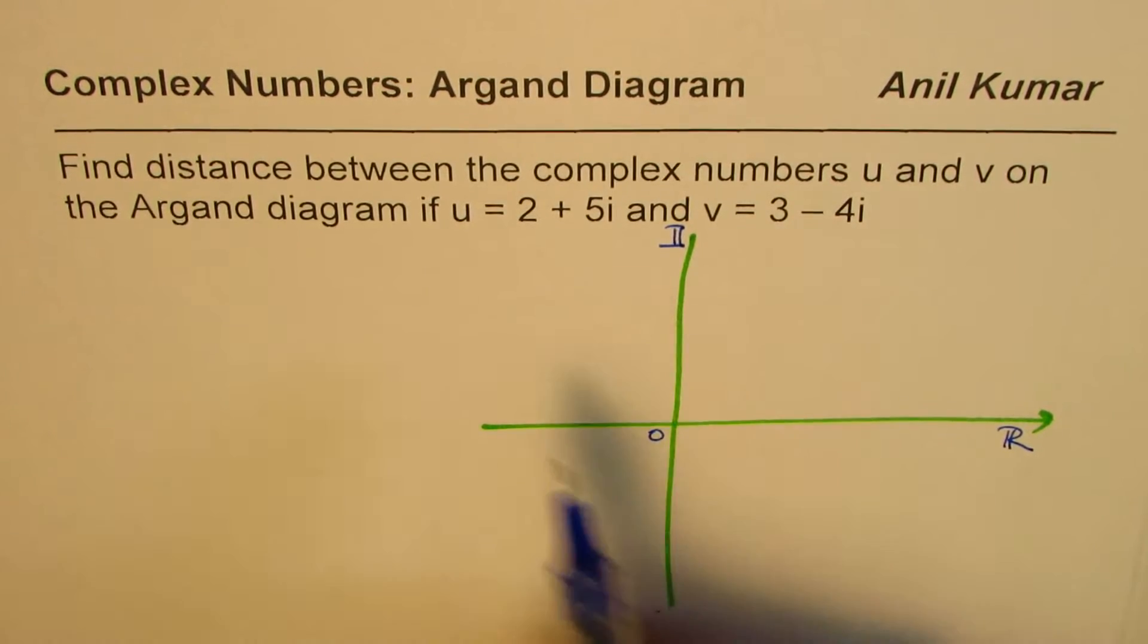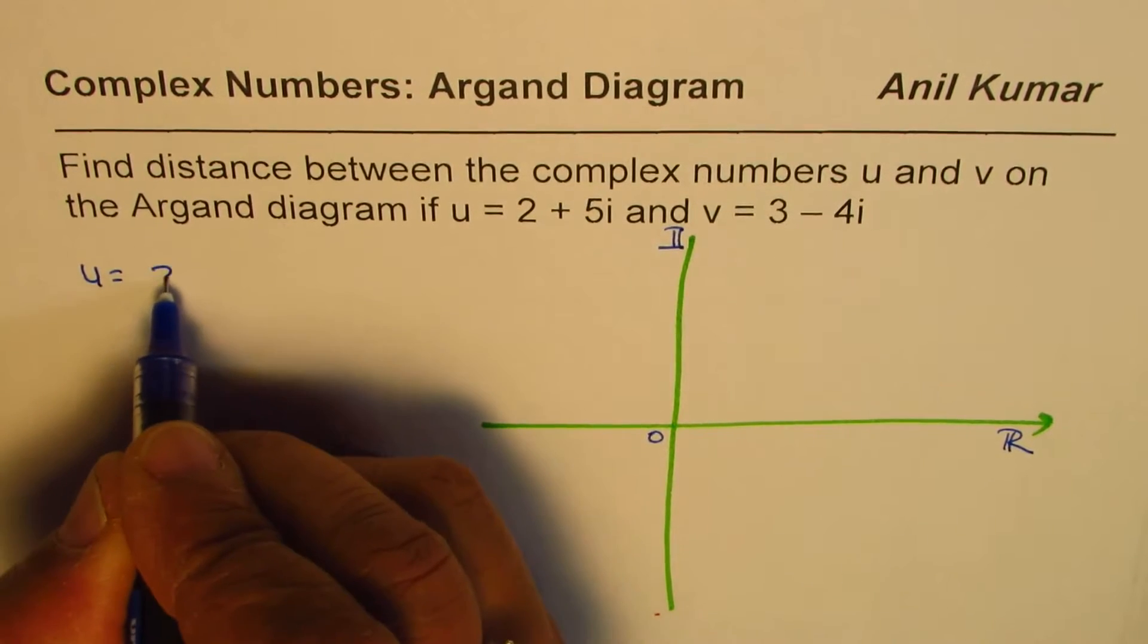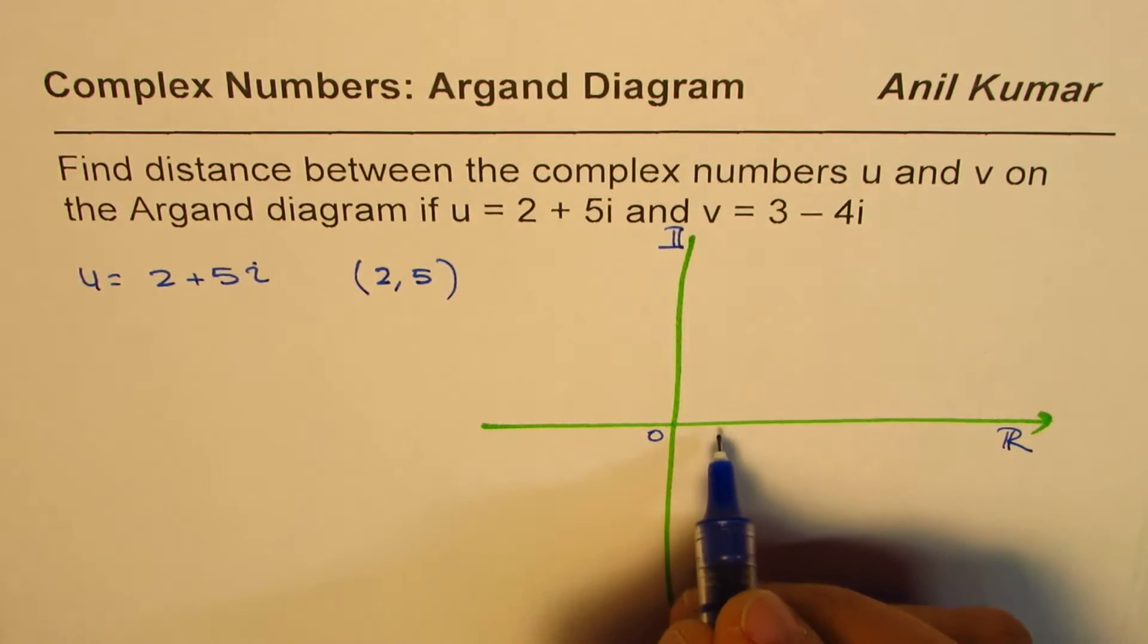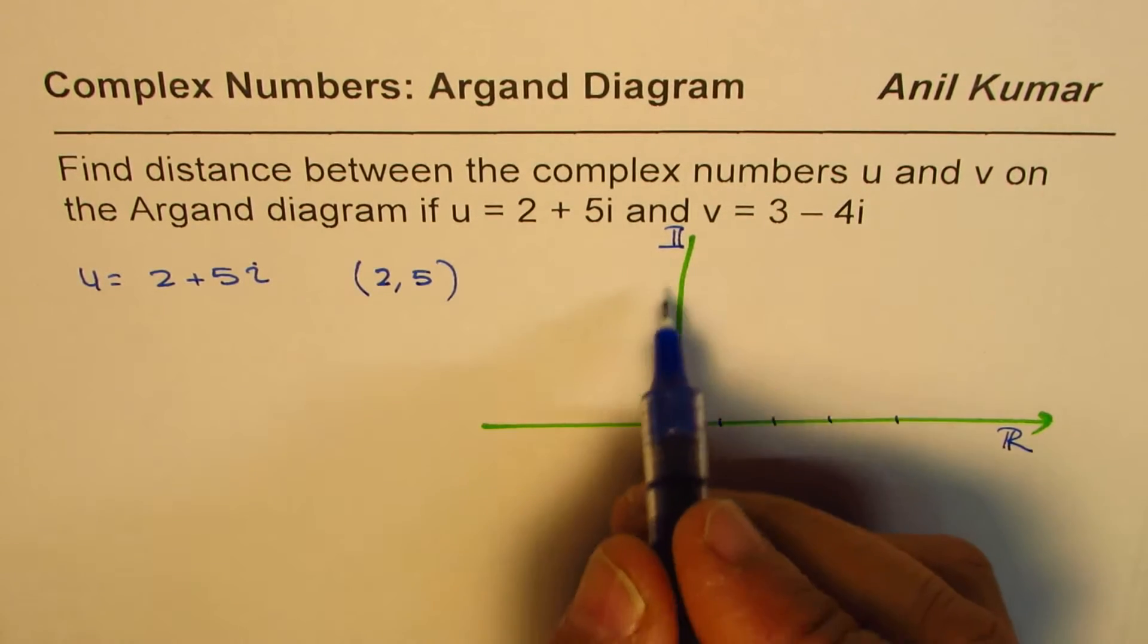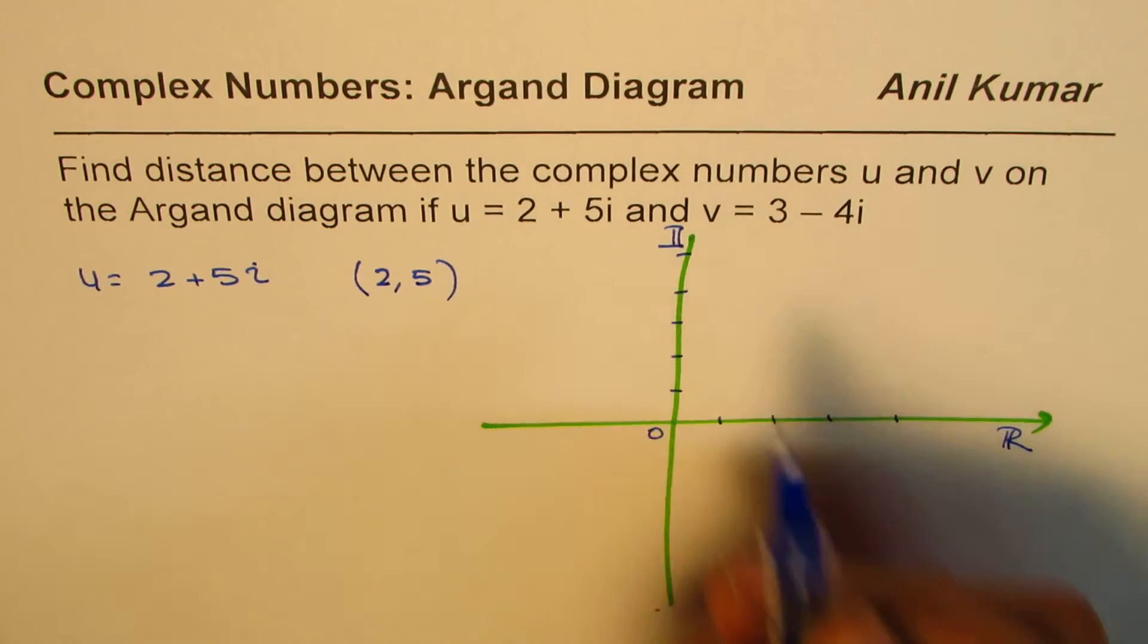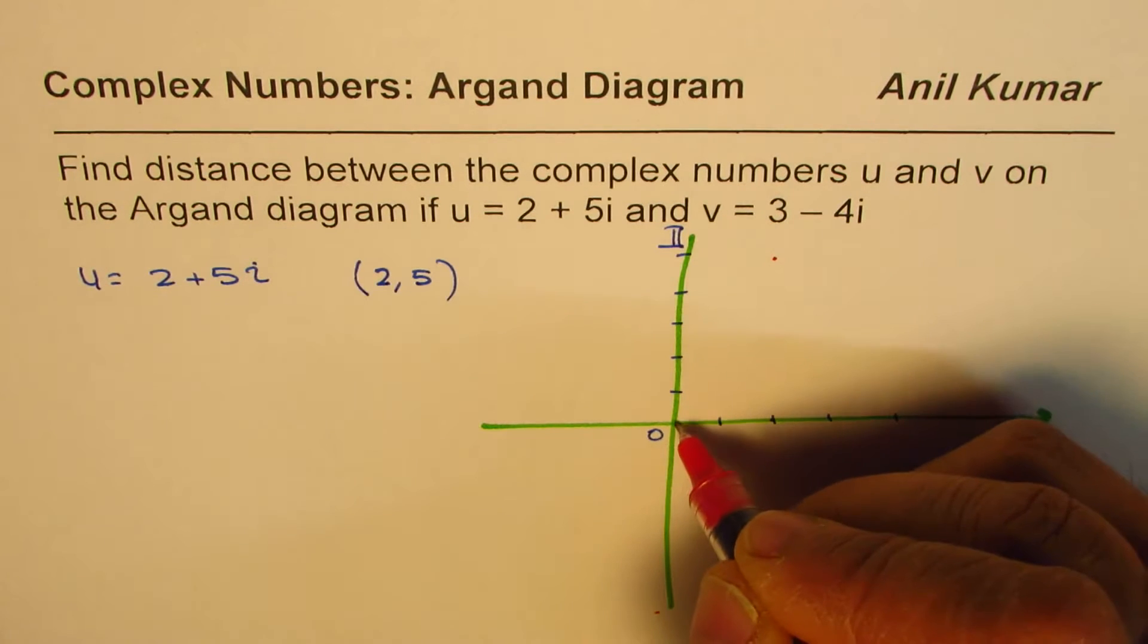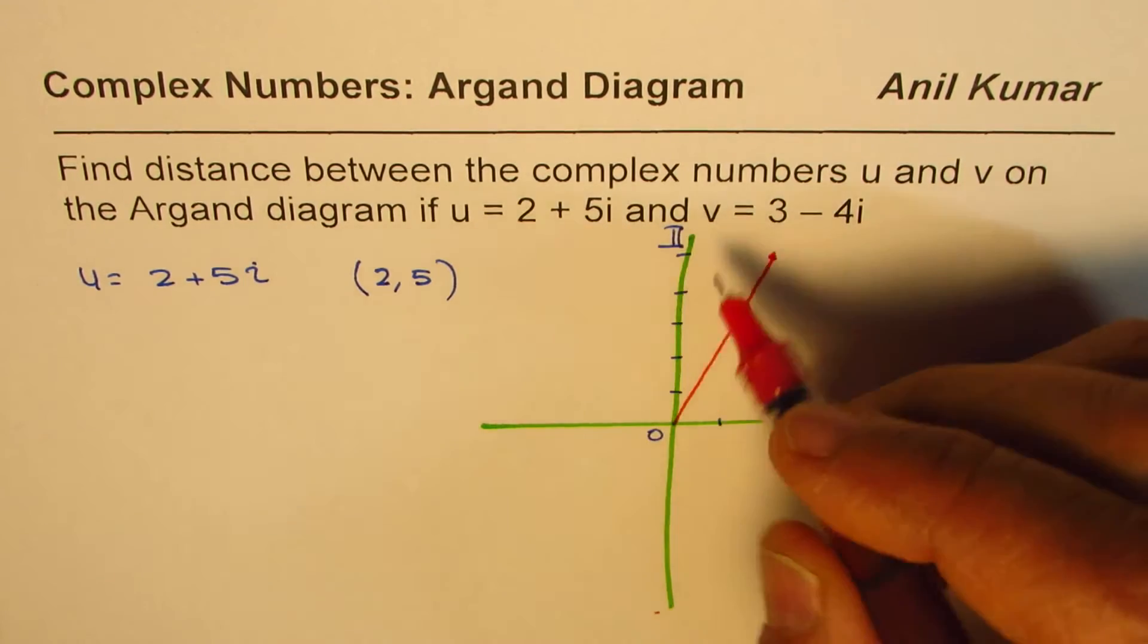So we have two complex numbers, u which is equal to 2 plus 5i. In this plane, we could write them as a coordinate point 2 and 5. So 2 is along the real side: 1, 2, 3, 4, and 5 is on the complex number side which is 1, 2, 3, 4, 5. So 2 for us will be this and 5 up, so that's the point. That becomes the complex number 2 plus 5i.